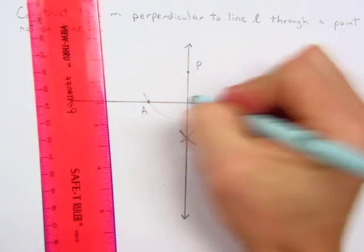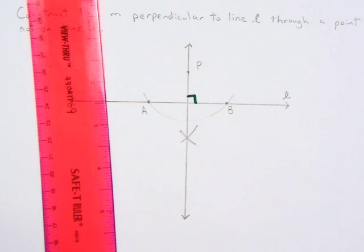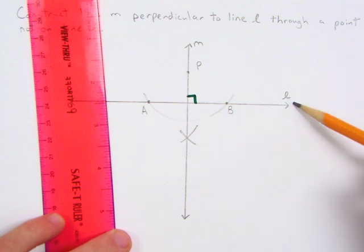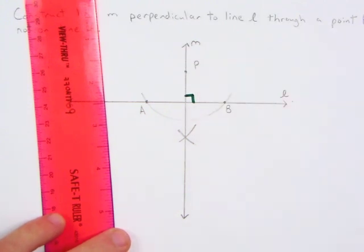And if you've done this, then we do have line M perpendicular to line L through point P.